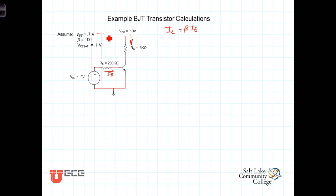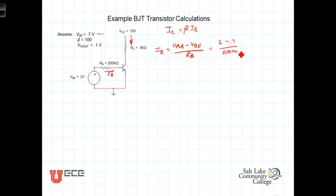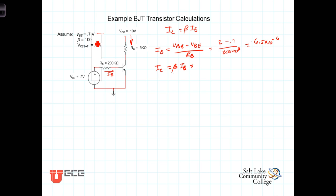Given that, we can calculate I sub B. I sub B is simply V_BB minus V_BE divided by R sub B, which in this case is equal to 2 volts minus 0.7 volts divided by the 200,000 ohm resistor, which gives us a value of 6.5 times 10 to the minus 6 amps, or 6.5 microamps. I sub C then is going to be beta times I sub B, which is beta equals 100, so 100 times that gives us I sub C equal to 6.5 times 10 to the minus 4 amps.